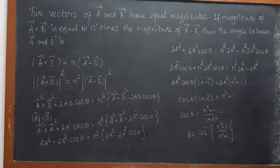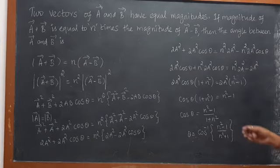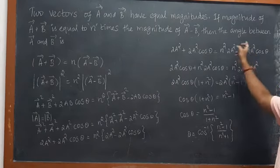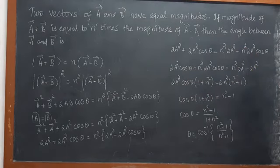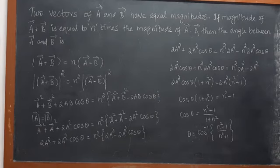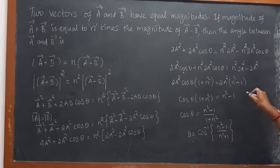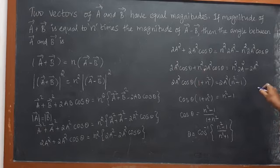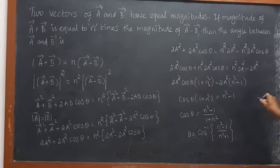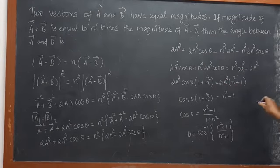All the cosθ terms should come to one side and other terms to the other side. We have minus n squared 2A squared cosθ, so that goes to the other side. Therefore, 2A squared cosθ plus n squared 2A squared cosθ equals n squared 2A squared minus 2A squared. Taking 2A squared cosθ as common, the remaining factor is 1 plus n squared. Taking 2A squared as common on the right gives n squared minus 1. Then 2A squared cancels.